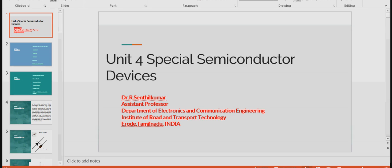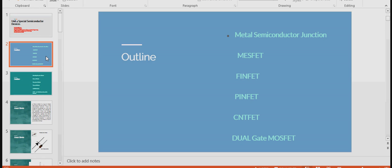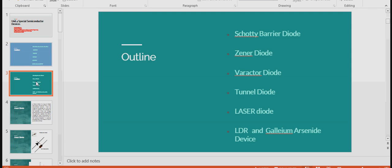Welcome to the video lecture on Unit 4 Special Semiconductor Devices, Class No. 3. This unit covers Metal Semiconductor Junction, JFET, PINFET, CNTFET, Dual-Gate MOSFET, Schottky Barrier Diode, Zener Diode, Varactor Diode, Tunnel Diode, Laser Diode, LDR, and Gallium Arsenide Device.